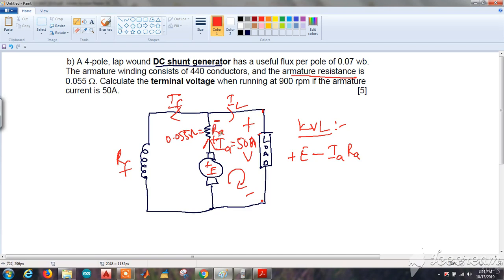Minus V equals zero. This completes the loop. I can write that E equals V plus Ia Ra. This is the equation for a shunt generator. We know Ra, we know Ia, we have to find the terminal voltage V. We don't know E, the generated EMF, but we can find it out.